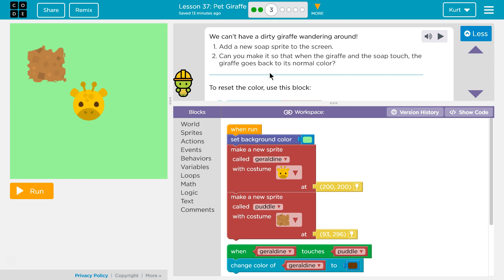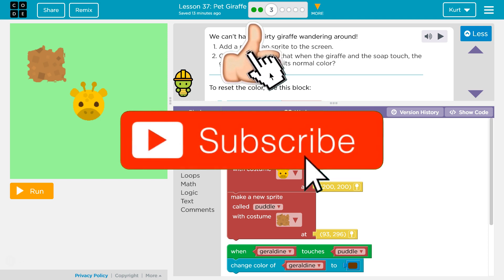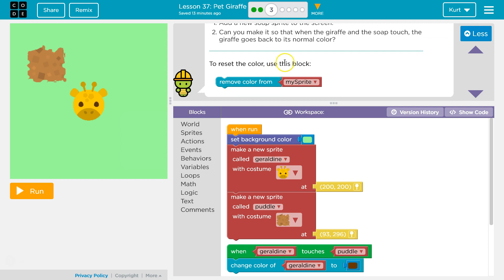We can't have a dirty giraffe wandering around, of course not. Add a new soap sprite to the screen. Can you make it so that when the giraffe and the soap touch, the giraffe goes back to its normal color? To reset the color, use this block.